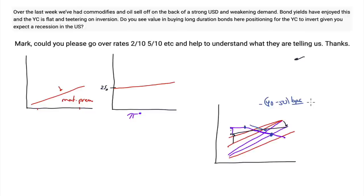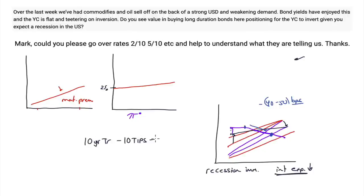An inverted yield curve tells us the market expects two things: a recession with lower rates in the future, and lower inflation expectations — because the best way to cure inflation is to kill demand and cause a recession. We've seen this going on in the long end of the curve. If we look at break-even rates — the 10-year nominal Treasury yield minus the 10-year TIPS yield — we get the break-even rate showing inflation expectations have been coming down over the last three weeks since the high in rates on June 14th.